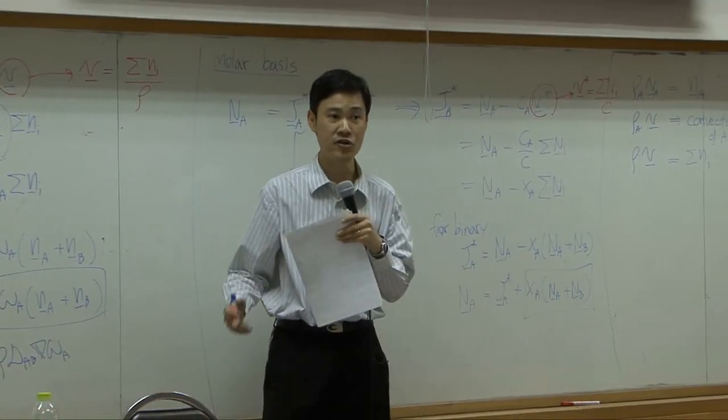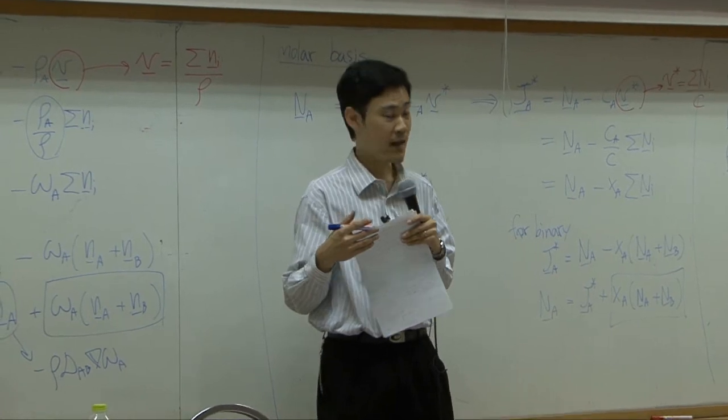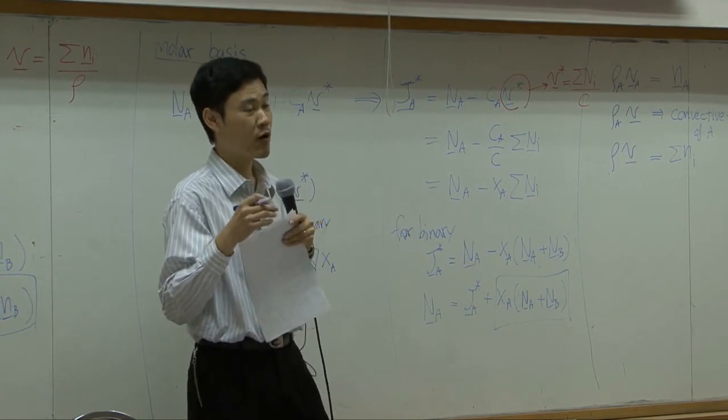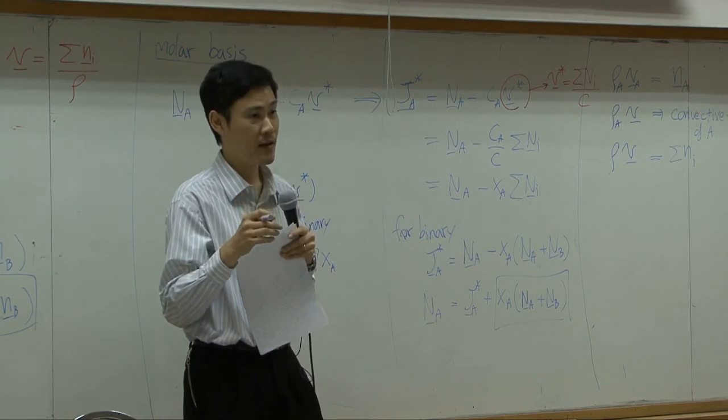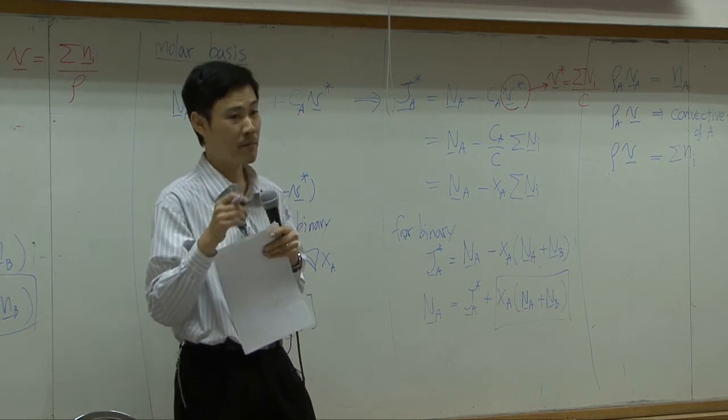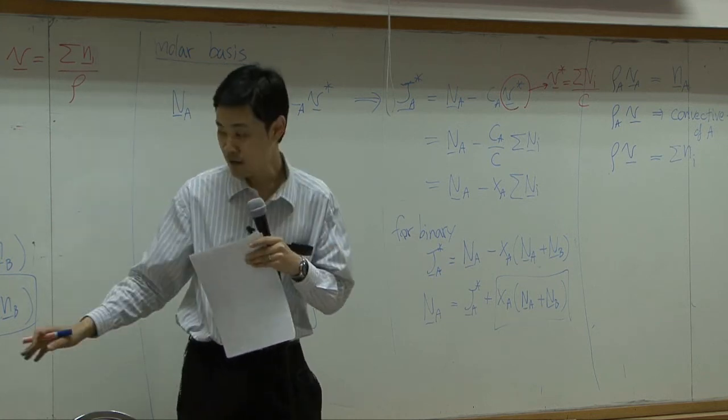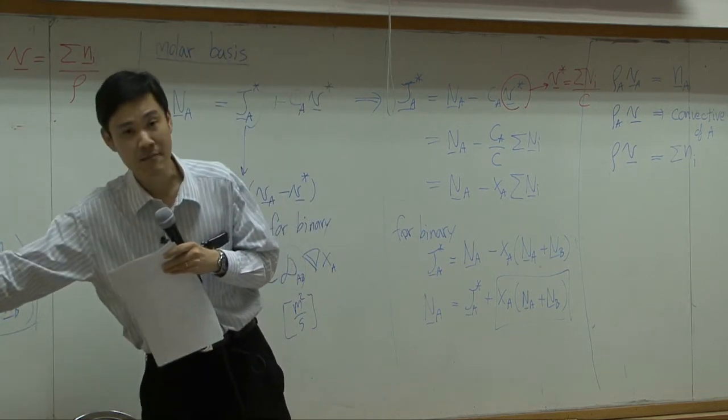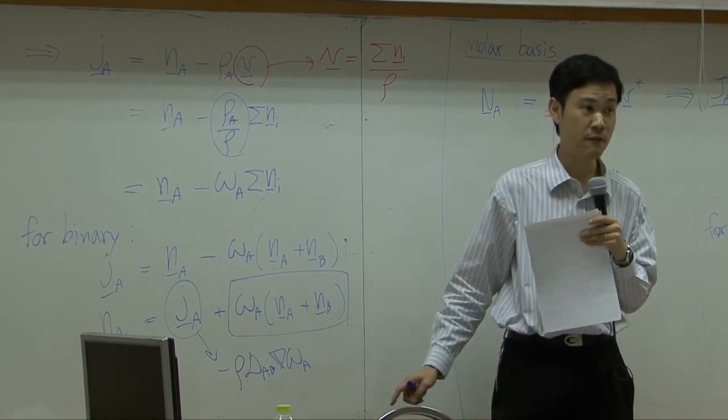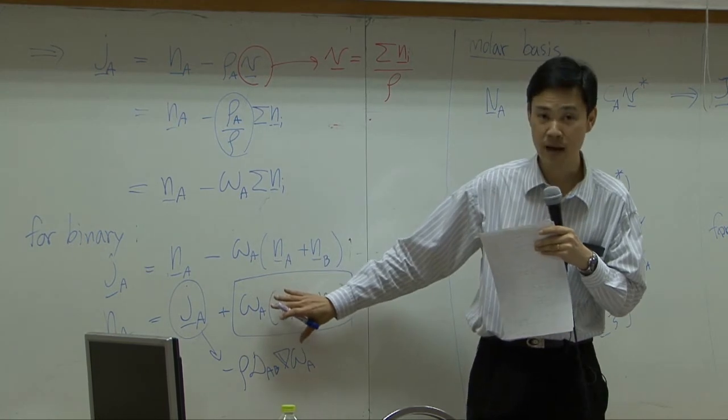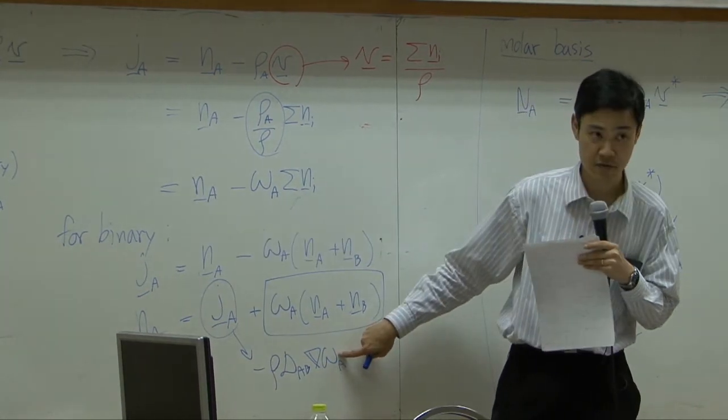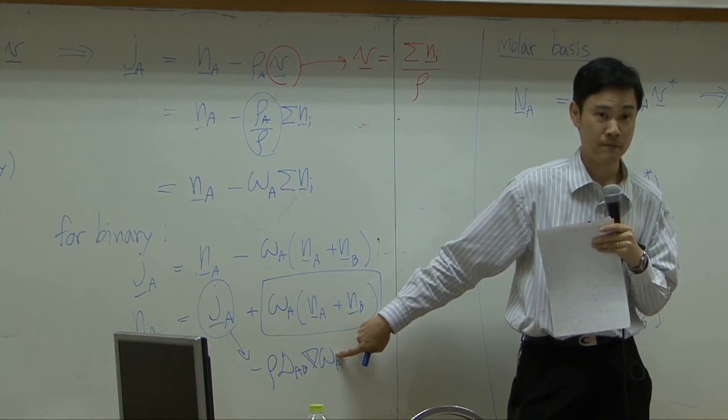Molar basis into shell balance. You have input and output. And then you can convert the flux into what you want to measure. Like, if you want to convert momentum flux into velocity, you can use Newton law. If you convert combined energy flux to temperature, you use Fourier law. In here, if you want to convert combined mass flux into what you can measure, which is concentration, then you will use Fick's law. So take this into shell balance, and then convert this or this part into Fick's law, you can get concentration. You integrate it, you get concentration profile. Same thing.